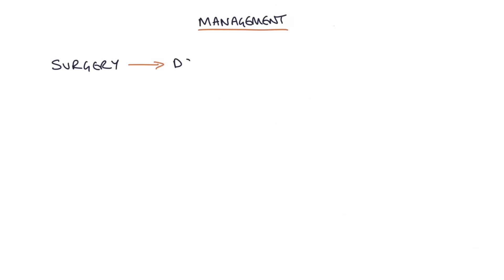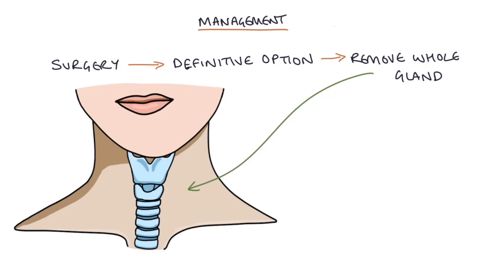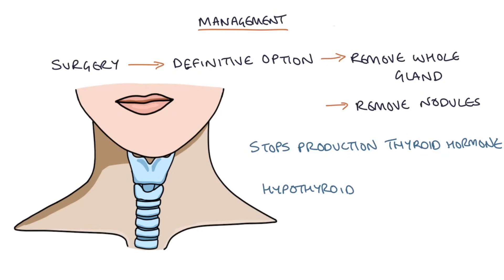Surgery is a definitive option to remove the whole thyroid gland or thyroid nodules. This effectively stops thyroid hormone production because the thyroid tissue is no longer present. However, the patient will be left hypothyroid post-thyroidectomy and will require levothyroxine replacement for life.